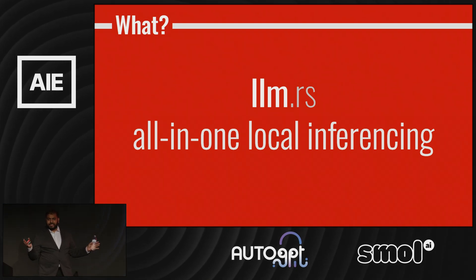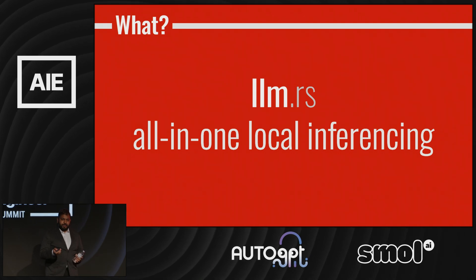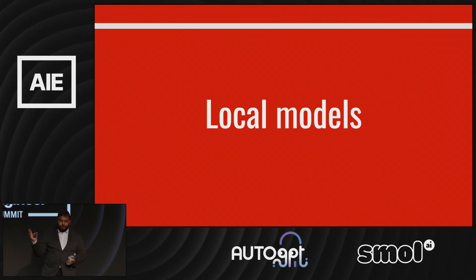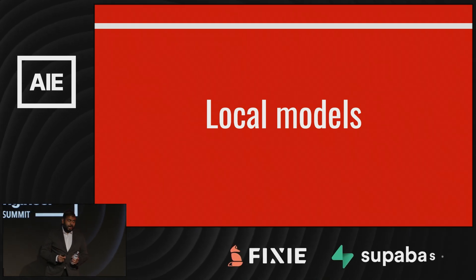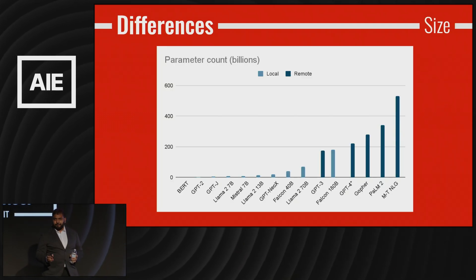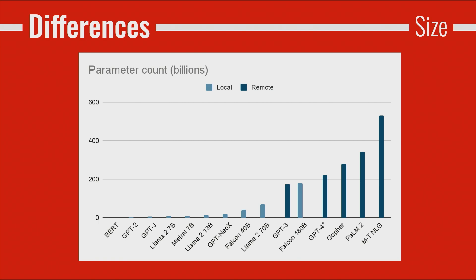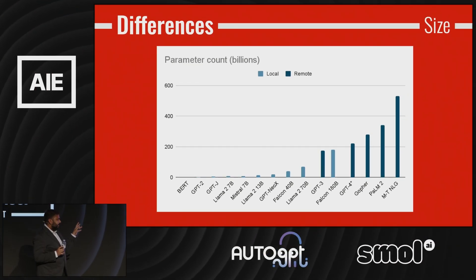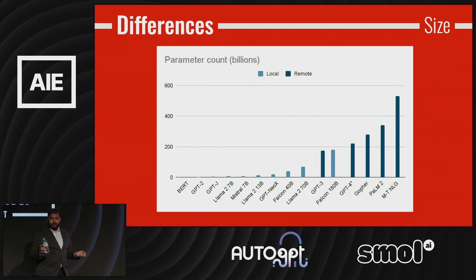Well, most of the models we've discussed at this conference have been cloud models — your ChatGPTs, your Claudes, your Bards. Local models offer another way, where you own the model and it runs on your computer. Let's quickly go over what that actually means. First up, size. Model size can be used as a rough proxy for the intelligence of the model. Most hosted models are really, really big — you can see them dominating the right-hand side of the chart. You have your GPT-3, your GPT-4, your PaLM 2. These are all insanely big in comparison to the open source models we have. We're beginning to see some bigger models thanks to LLaMA and Falcon, but even they pale in comparison to what the bigger players can do.